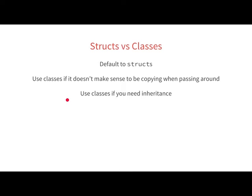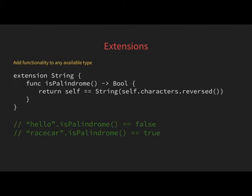Extensions in Swift allow you to add functionality to any type available to you. Here we're extending String — which in Swift is a struct — and adding a function called 'isPalindrome' that returns true if the string reversed equals itself. You use it just by calling 'hello.isPalindrome' — which is false — or 'racecar.isPalindrome' — which is true.